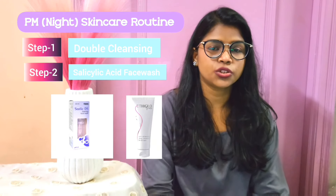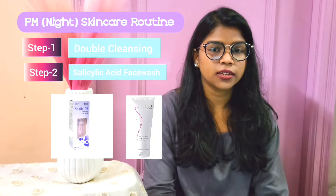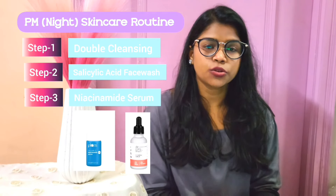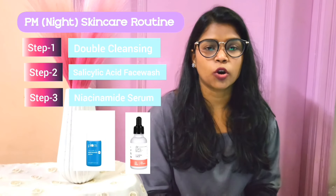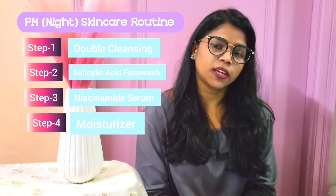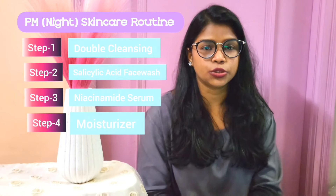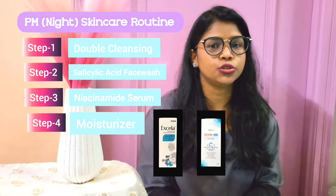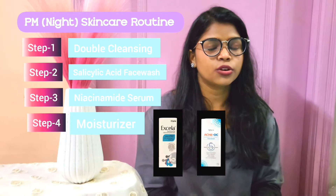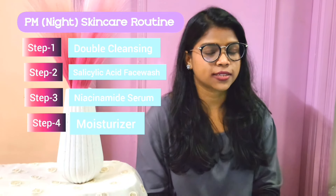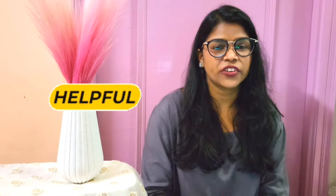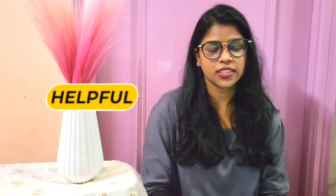Step two of the PM routine is using the same cleanser you used in the morning. For step three, you can use the same serum mentioned for the morning. If you don't want to use a serum at night, you can use a good moisturizer — the same one you used in the morning — and that completes your skincare routine for oily skin. I hope this was helpful — if it is, give it a thumbs up.